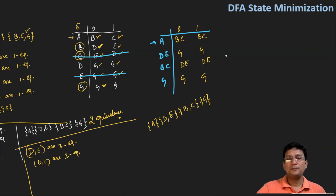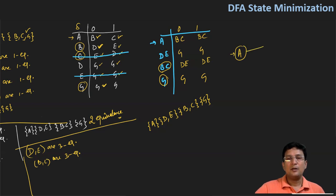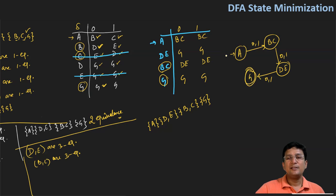Let's draw the DFA state transition diagram. One thing to remember: B and G are final states, so BC and G will be final states in this minimized DFA. A is the start state; on zero or one you go to BC. In BC, on zero or one you go to state DE. In DE, on zero or one you go to state G. G is a final state and BC is a final state. This is the minimized DFA for the given DFA.